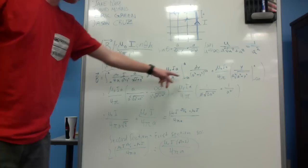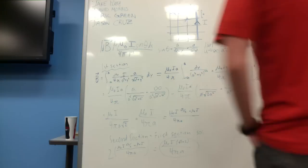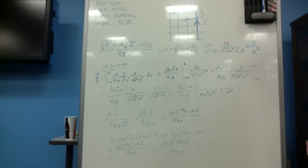And then we just pull out the constants, mu naught, the current, A and 4 pi. And we're left with this, and there's a formula for this to give us this equation right here. The integral of that gives us this equation.